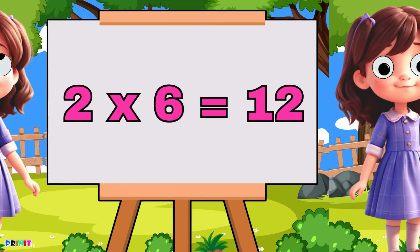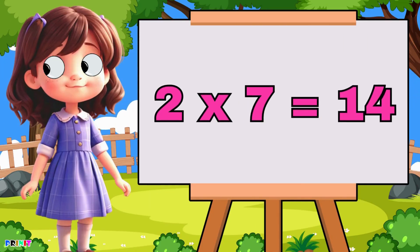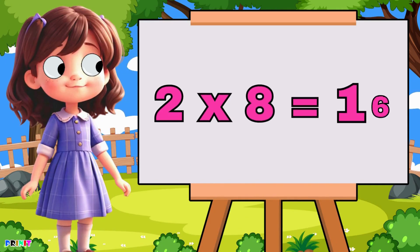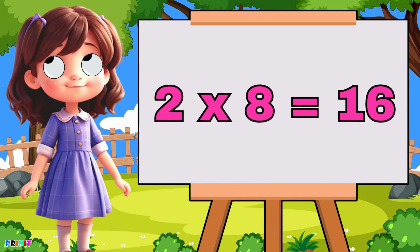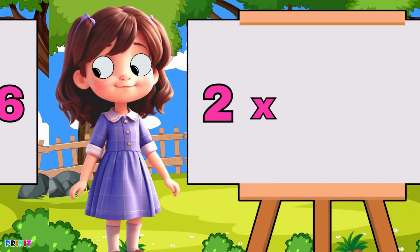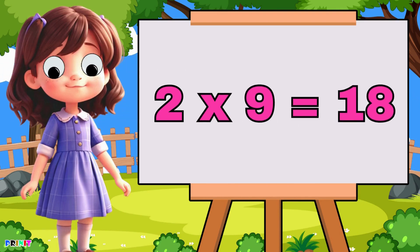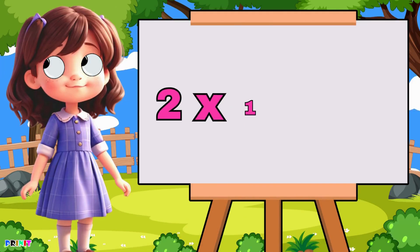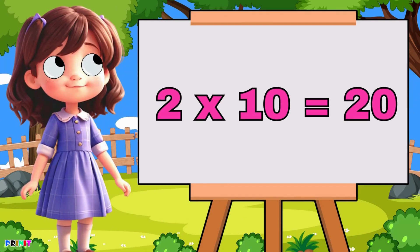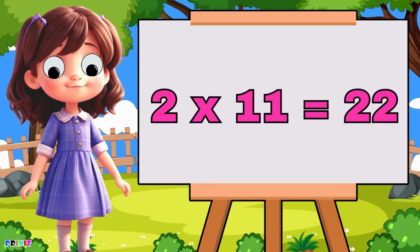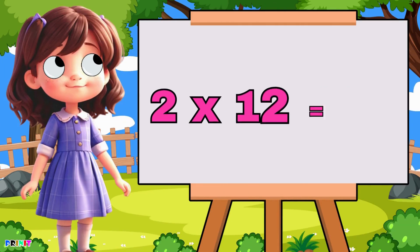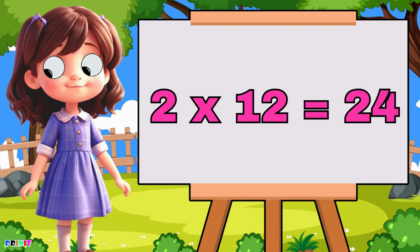Two seven's are fourteen, two eight's are sixteen, two nine's are eighteen, two ten's are twenty, two elevens are twenty-two, two twelfs are twenty-four.